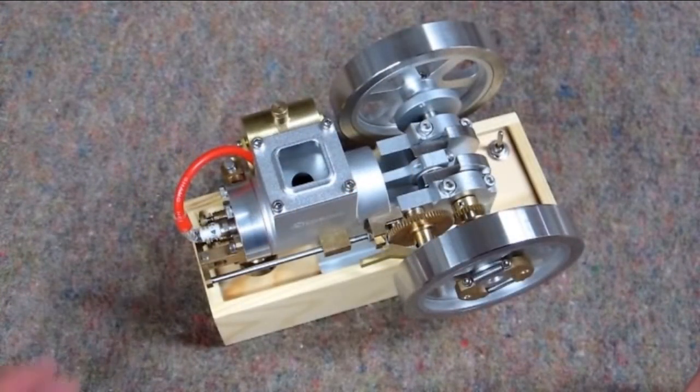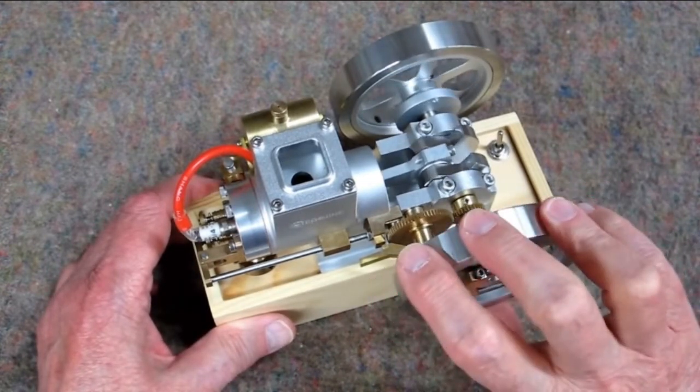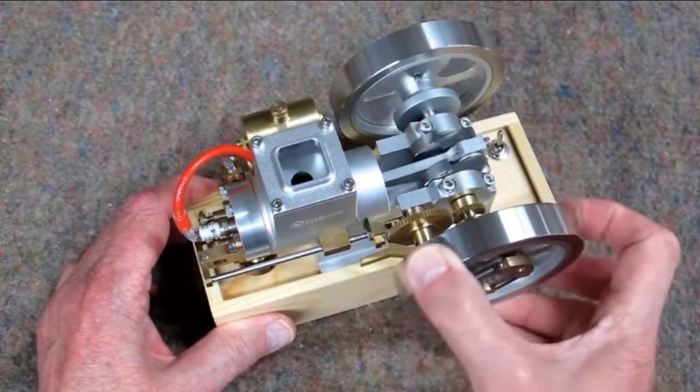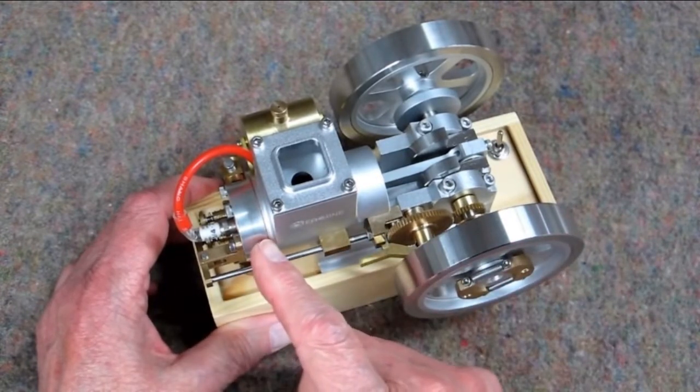The hit and miss engine is a four cycle engine. What that means is as the piston travels to the rear, that's the intake stroke. It pulls a vacuum on top of the piston,